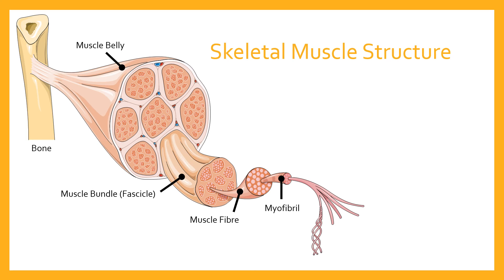Going further down in scale, each muscle fiber is made up of myofibrils. One more step down, the myofibrils are made up of filaments. We'll discuss in another video what those filaments are and how they work — you may have heard of sliding filament theory. Each muscle also has its own blood supply, primarily to supply the muscle with oxygen and remove carbon dioxide, which we'll cover in detail in the respiratory system videos.